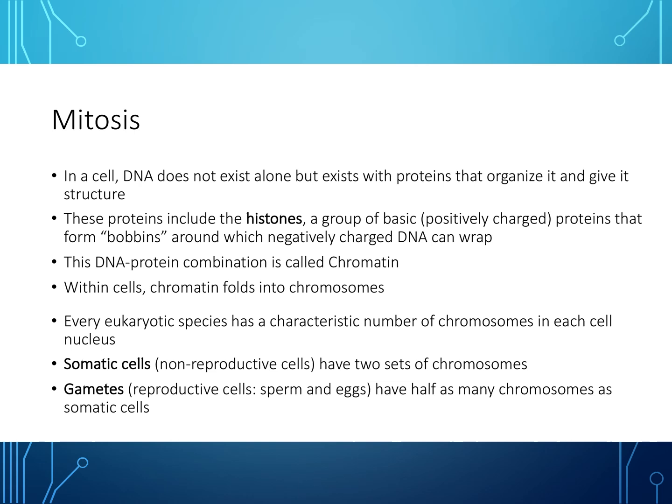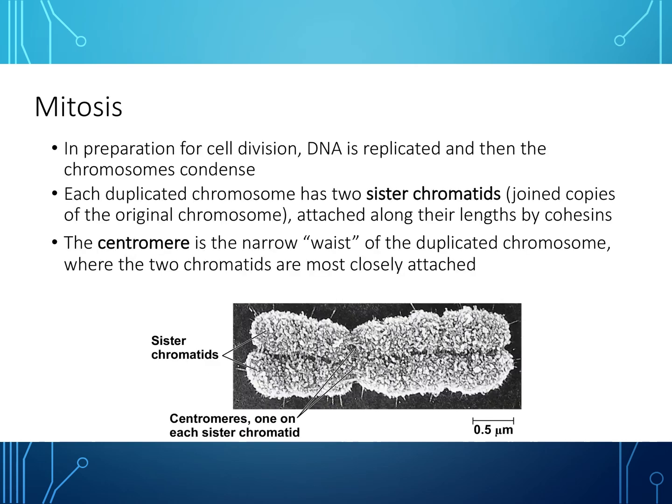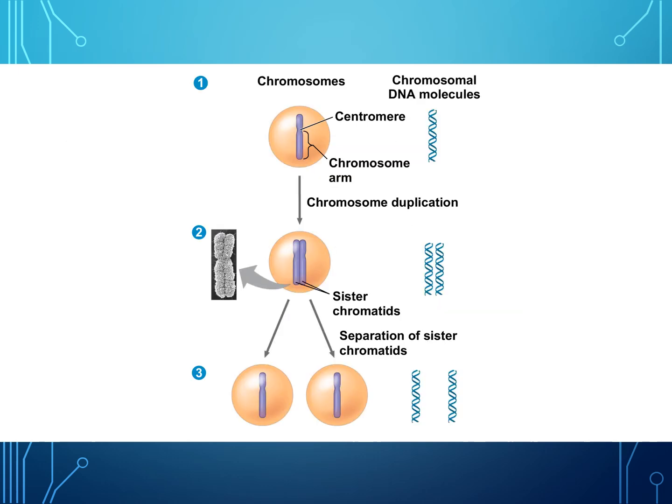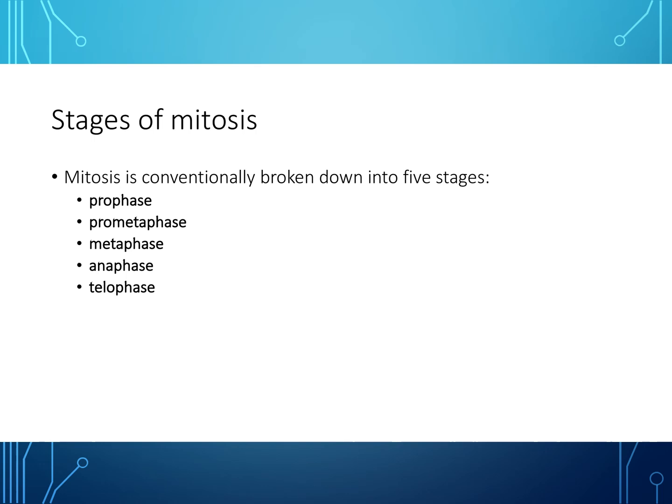This DNA-protein combination is called chromatin. Chromatin then folds into chromosomes. Every eukaryotic species has a characteristic number of chromosomes in each cell nucleus. Somatic cells, or non-reproductive cells, have two sets of chromosomes. Gametes, which are reproductive cells such as sperm and eggs, have half as many chromosomes as somatic cells. DNA is replicated and the chromosomes condense in preparation for cell division. Each duplicated chromosome has two sister chromatids — joined copies of the original chromosome — attached along their lengths by cohesins. The centromere is the narrow waist of the duplicated chromosome where the two chromatids are most closely attached.